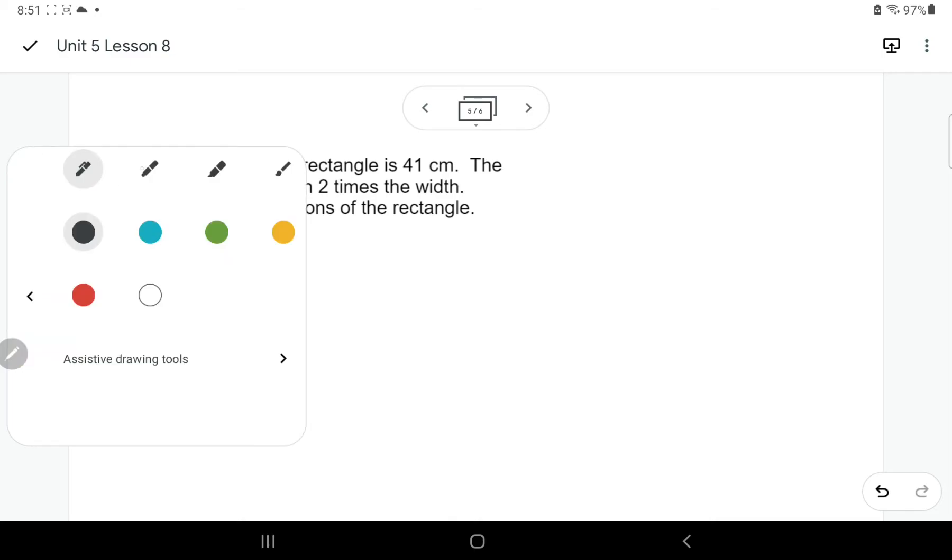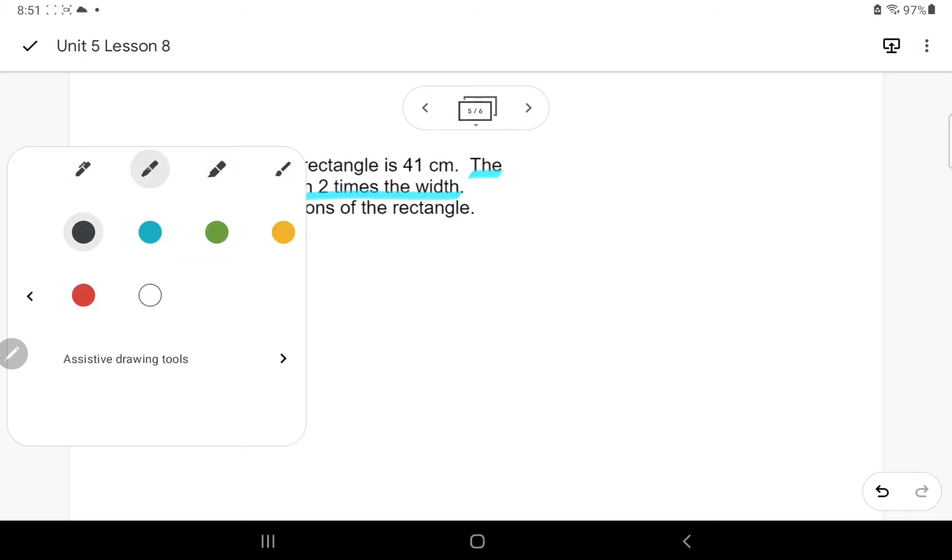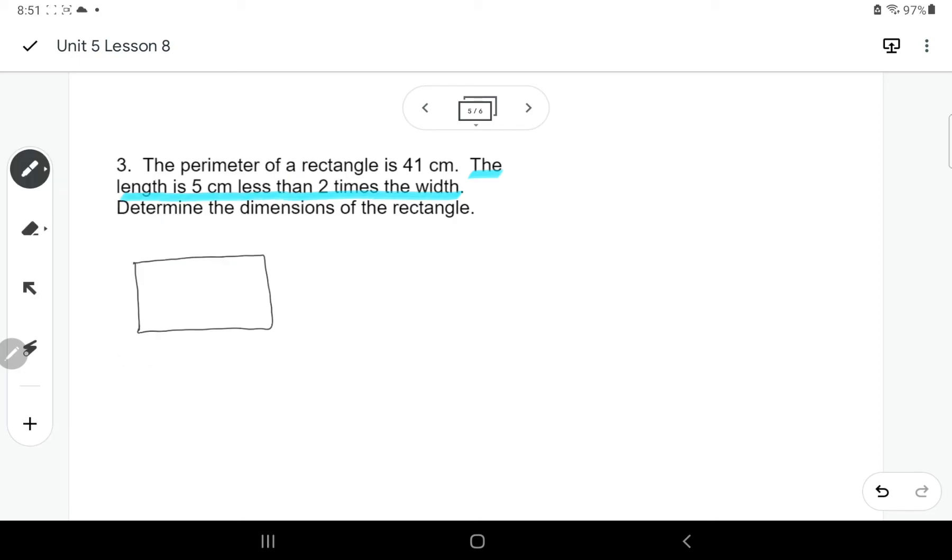Okay. So then I'm going to kind of highlight some stuff that I want to look at. So this says the length is five centimeters less than two times the width. That's a little bit to decipher. So I know I'm going to have something dealing with the width. I'm just going to put width there.